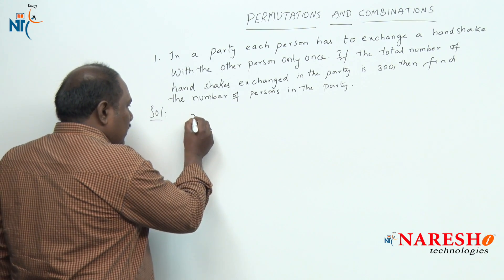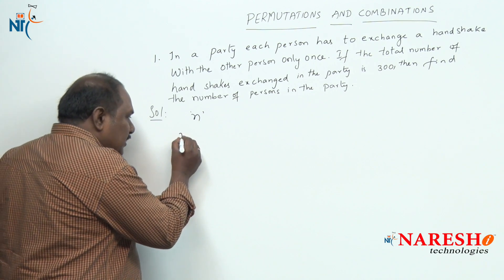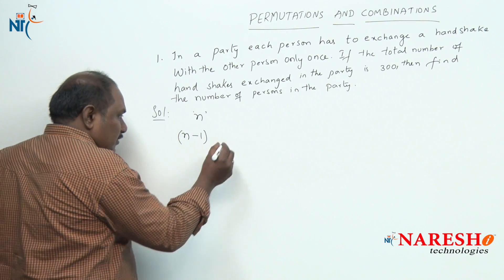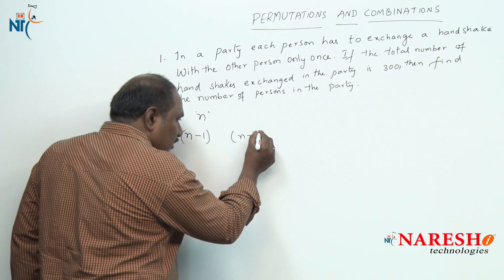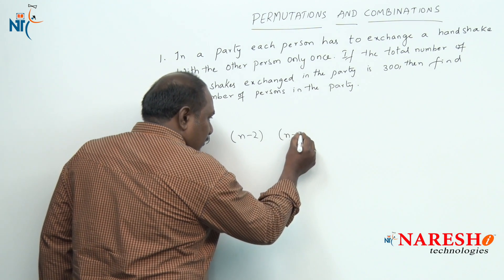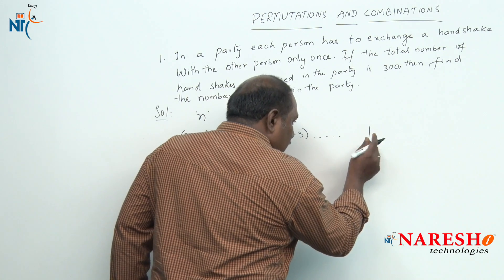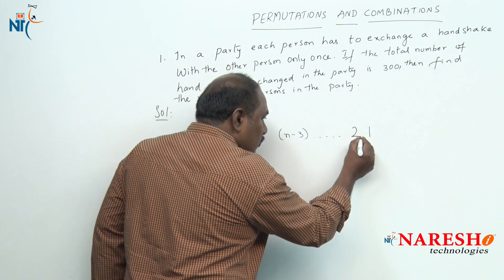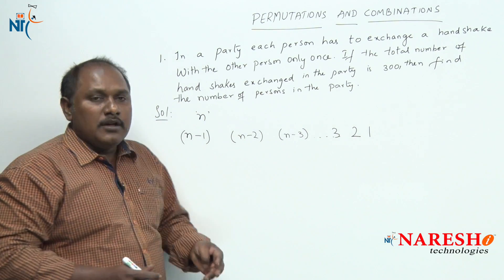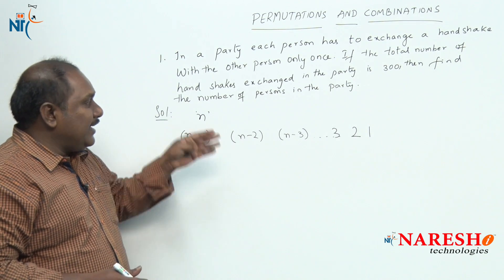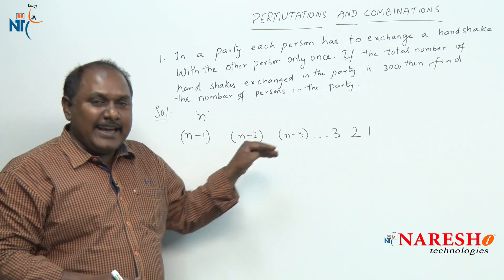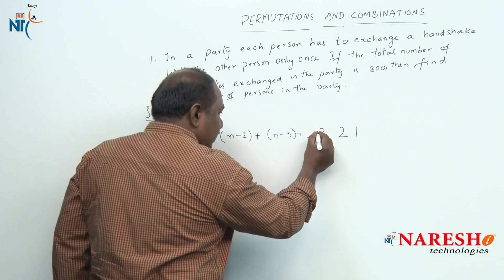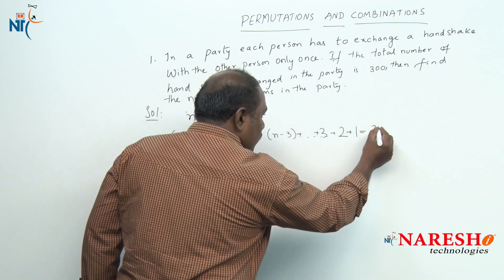If I assume there are n persons in a party, the first person has to exchange handshakes with n minus 1 persons. The second person exchanges with n minus 2 persons, the third person with n minus 3, and so on, till the last but one person exchanges 1 handshake and the last person 0. According to the question, the total number of handshakes is 300, so: (n-1) + (n-2) + (n-3) + ... + 1 = 300.